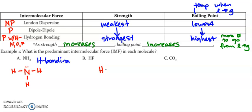Looking at HF: hydrogen bonds to fluorine, and they each bond one time. This is linear, but it is polar because the two ends are different elements. I do have hydrogen bonded to F — which is N, O, or F — so this is also hydrogen bonding as its predominant force.